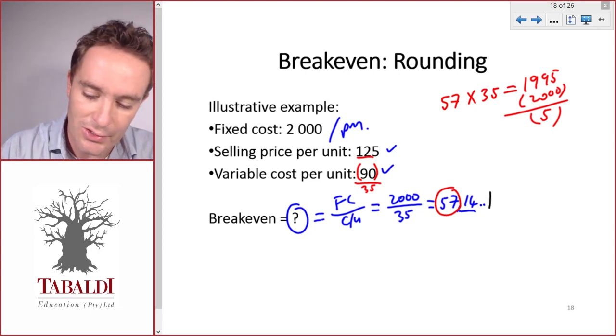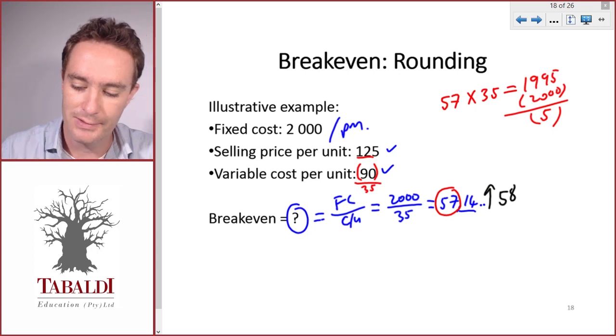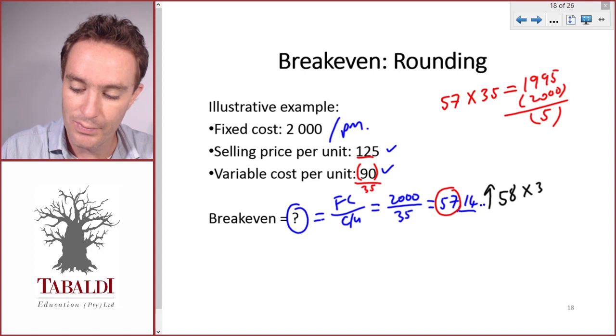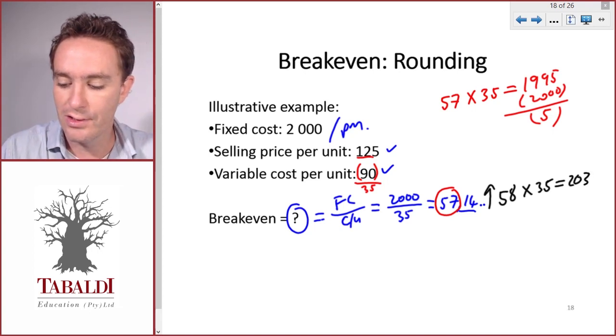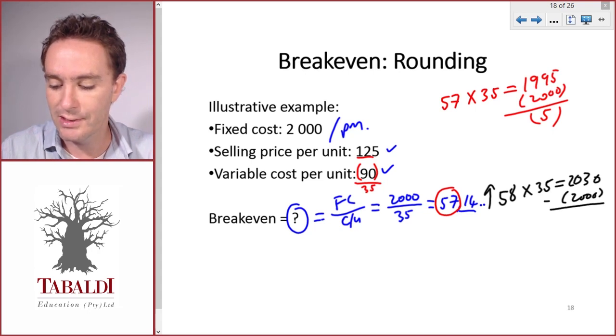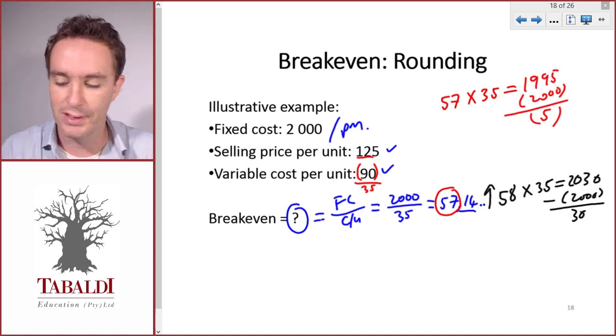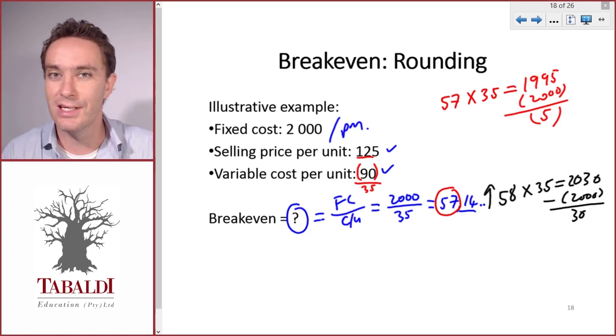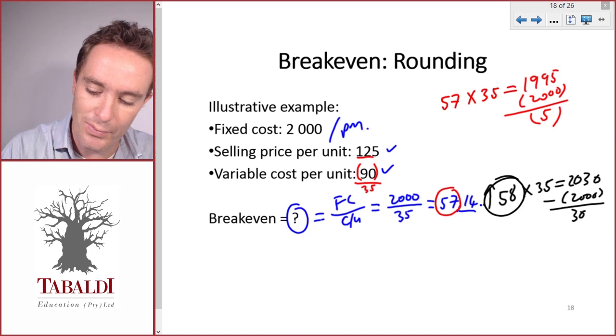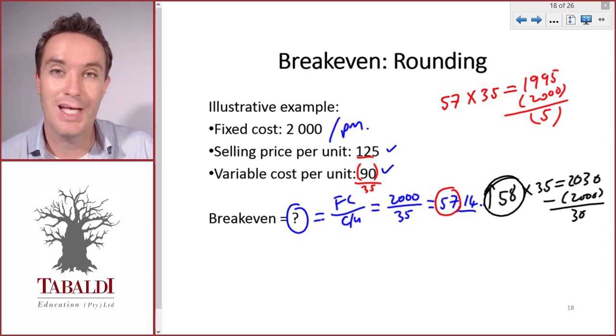We need to round up to 58, and at 58 bicycles per month our contribution at 35 per bicycle will be 2,030. So we'll make a profit. We deduct our fixed cost and make a profit of 30. Even though it's not a zero profit, it's a positive profit. So our breakeven point is 58 bicycles.